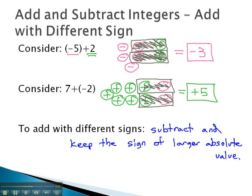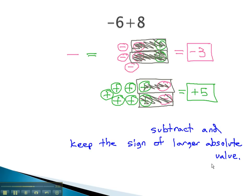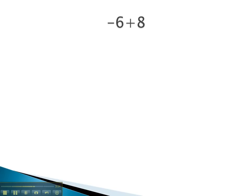Let's try some examples where we subtract and keep the sign of the larger absolute value without having to draw all these pluses and minuses. Here we have negative six plus eight. We have different signs, a negative six and a positive eight. We see that the positive number is bigger, so our answer is positive. There will be positives left over. How many left over? We'll subtract the numbers. Eight minus six is two.